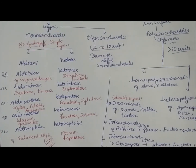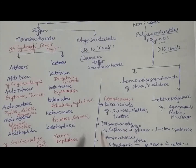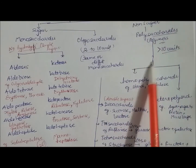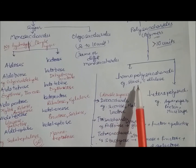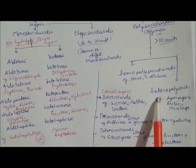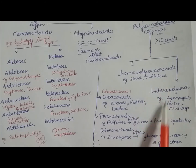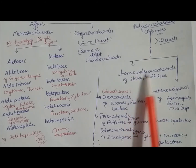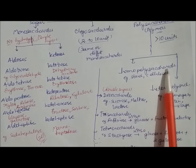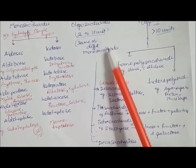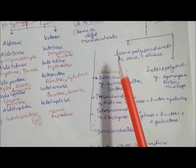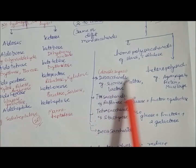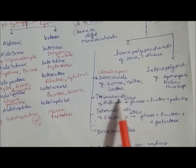Polysaccharides are of two types: homopolysaccharides and heteropolysaccharides. Heteropolysaccharides include agar-agar, pectin, and mucillin; homopolysaccharides include starch and cellulose. In oligosaccharides with two to ten units: if the unit is two, it is called a disaccharide; if three, a trisaccharide.